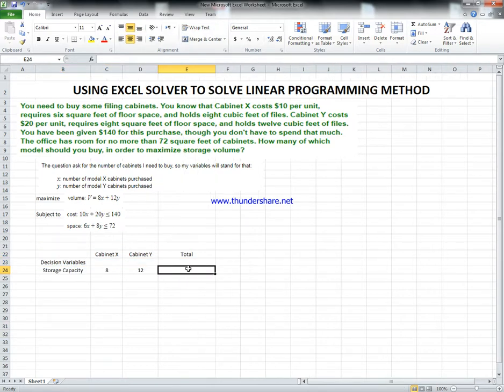I'm going to write it as an equation: Total storage volume equals the number of Cabinet X I'm going to buy times storage volume. For example, if I buy one of each, I should end up with 20 cubic feet. If I buy two of X, I should end up with 28. I'm going to leave those values blank and I want the system to calculate those values.